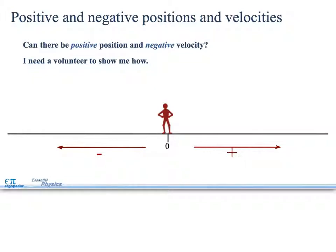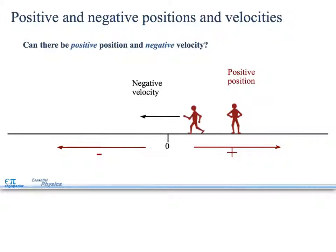Positive and negative positions and velocities. Can there be a positive position and a negative velocity? I'll show you with a volunteer how this works. Positive position, it's moving this direction. Negative velocity would be moving that direction. So, positive position, negative velocity.